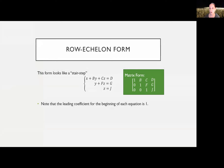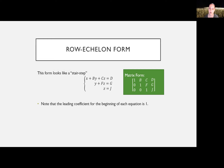Row echelon form (REF) is like an upside-down staircase: for three variables, the top equation has x, y, and z; the next has y and z; the last has just z. In matrix form, you have ones on the diagonal and zeros below them, with any values above. Reduced row echelon form (RREF) goes further — each variable appears alone in its equation, giving you the identity matrix with a final column of answers.